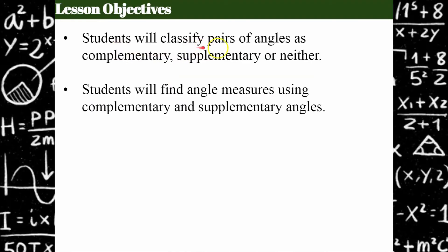So today we're going to classify pairs of angles as either complementary, supplementary, or maybe neither. And then we're going to use what we've learned to find angle measures using the ideas of complementary and supplementary angles.